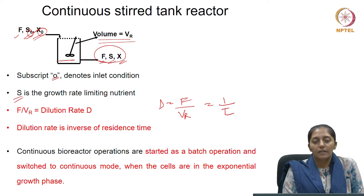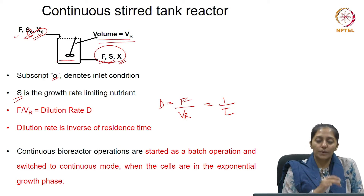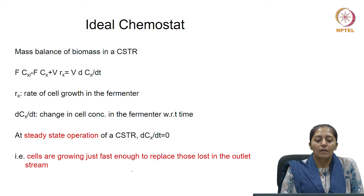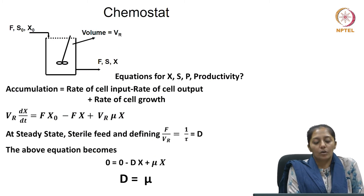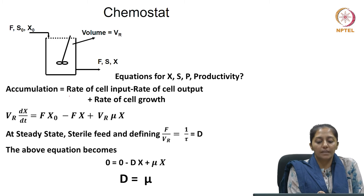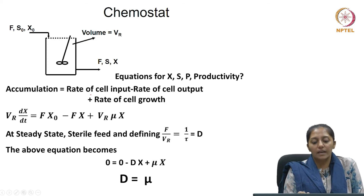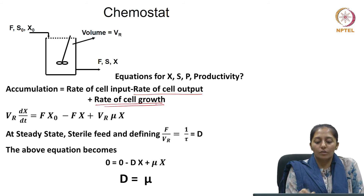Continuous reactor operations are generally started as batch — similar to fed-batch — and if the purpose is to continue the culture in the exponential phase and avoid nutrient limitation, it is switched to continuous mode when the cells reach the exponential phase. Now, for an ideal chemostat, if we do a mass balance across it for biomass and apply the continuity equation: the rate of accumulation of biomass equals the rate at which cells enter the reactor minus the rate at which cell mass leaves the reactor, plus the rate of cell growth.